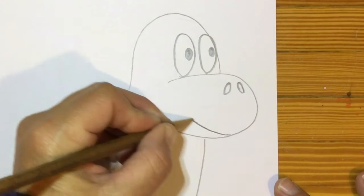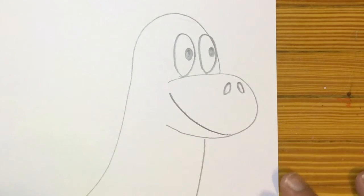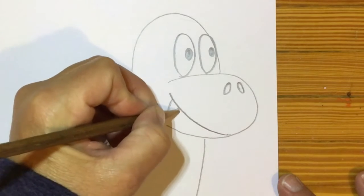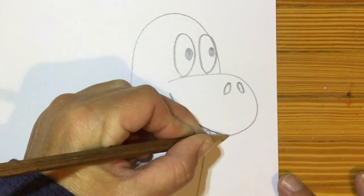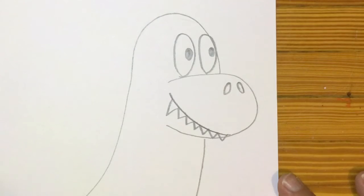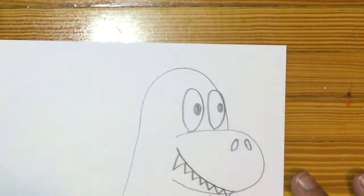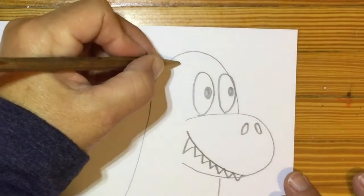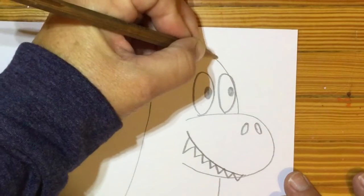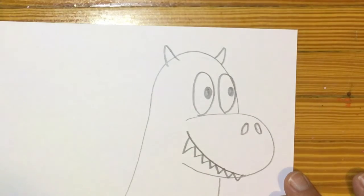You can add a smile and since this is a dragon I'm going to give him some sharp teeth just like that with triangles. Now on top of his head I think he probably needs some horns since he's a dragon.